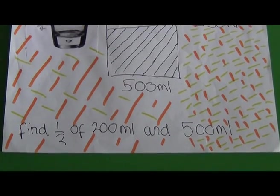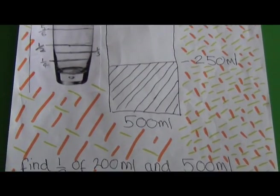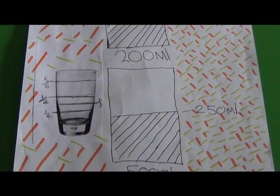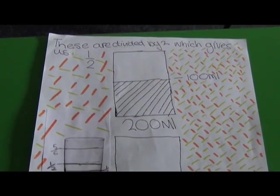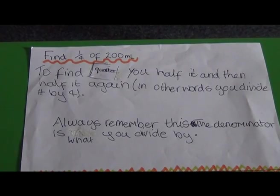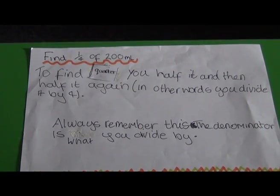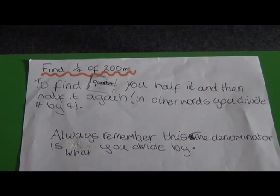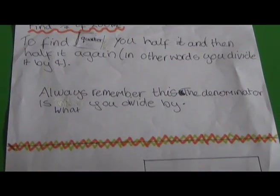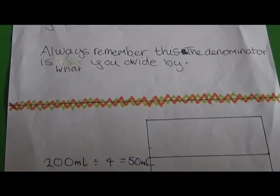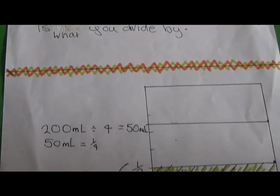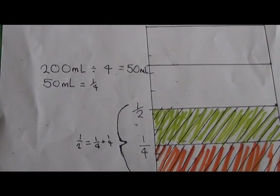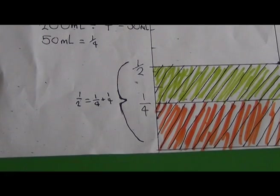Find half of 200ml and 500ml. To help you, draw diagrams like this. Find a quarter of 200ml. To find a quarter, you halve it, then halve it again — in other words, you divide it by four. Always remember: the denominator is what you divide by. 200ml divided by four equals 50ml. 50ml equals a quarter.